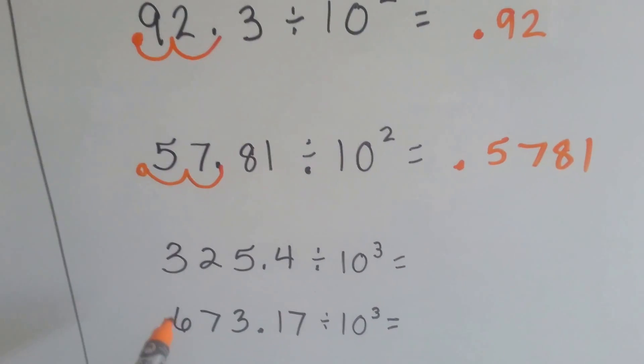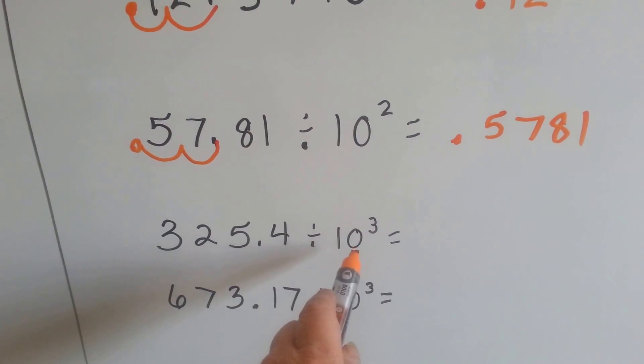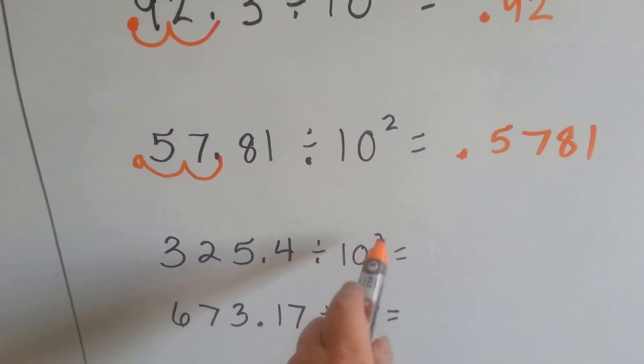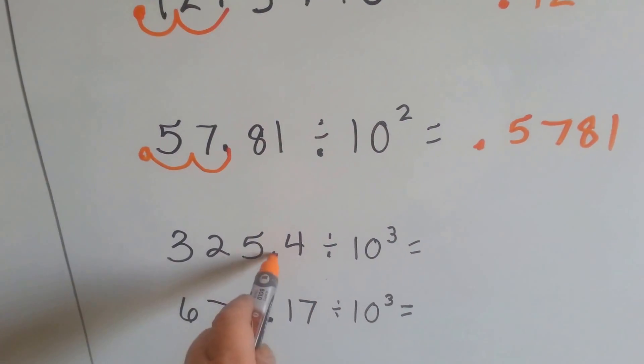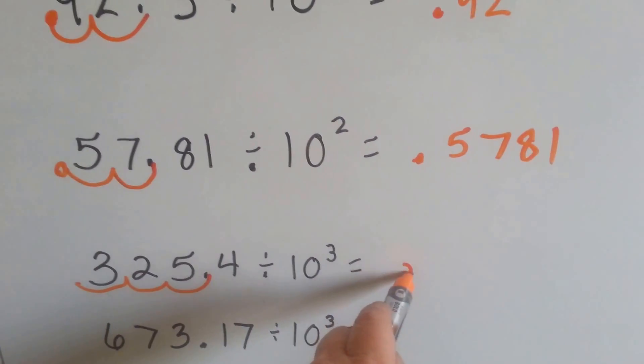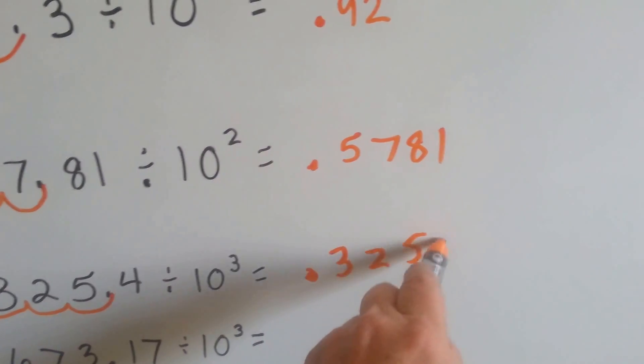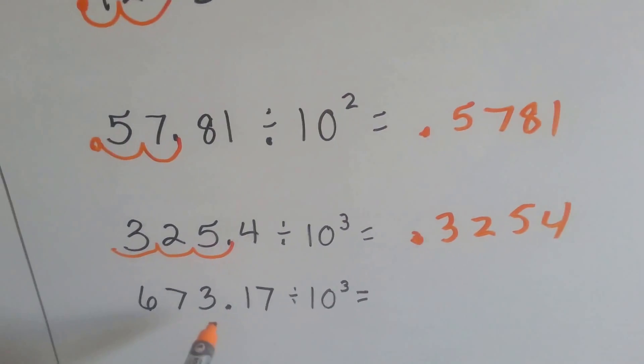How about this one? 325 and 4 tenths divided by 10 to the third power. Third power tells us how many hops to make, so we're going to go 1, 2, 3. So, now our answer is 0.3254.